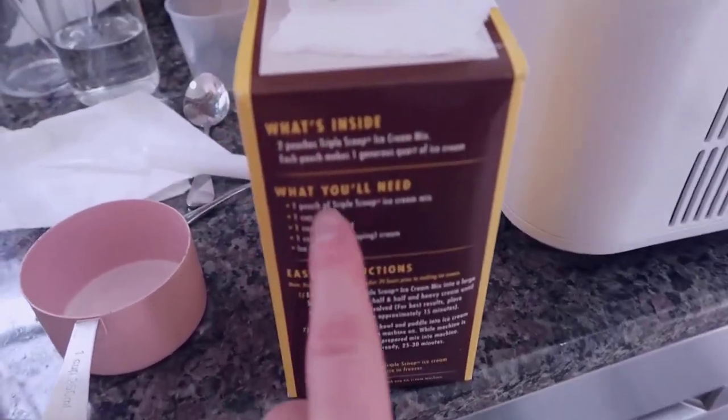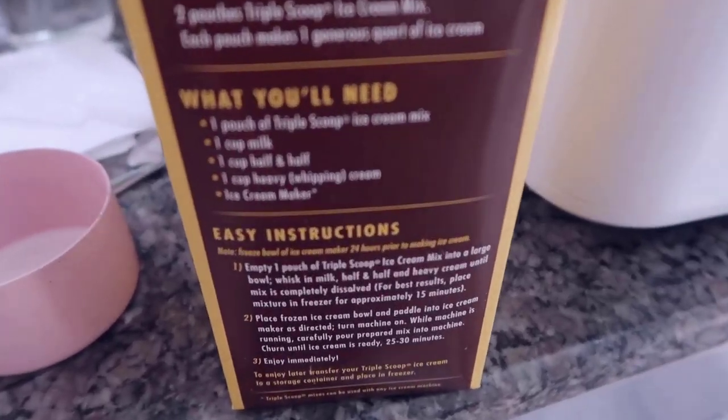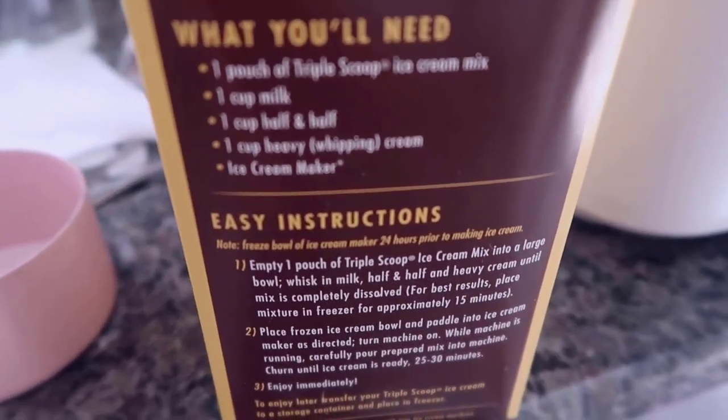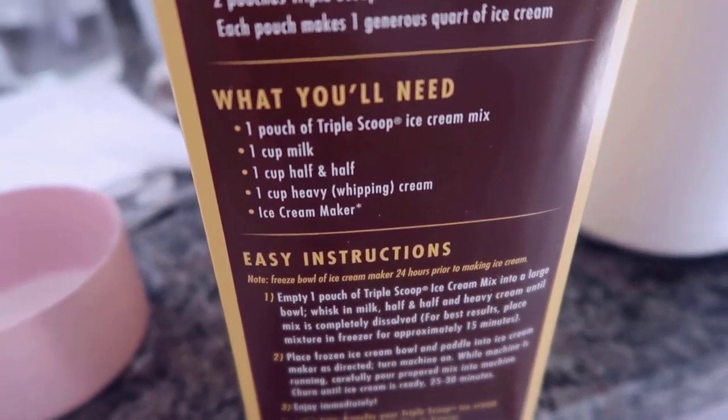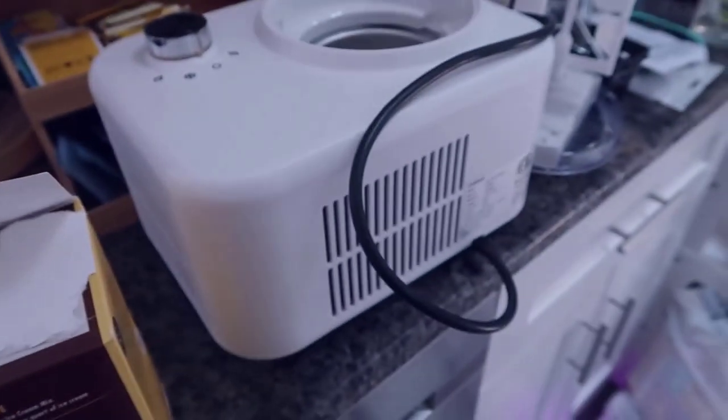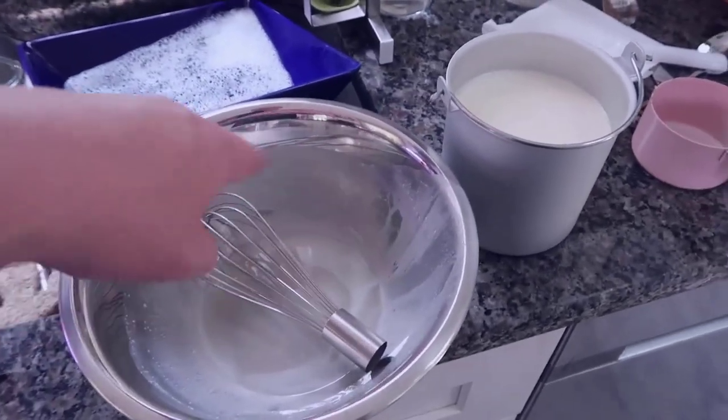This has me utilizing a few ingredients. You put a pouch of the Triple Scoop ice cream mix, one cup of milk, one cup of half and half, one cup of heavy whipping cream, and then obviously we're going to be using our ice cream maker from Kaoser.